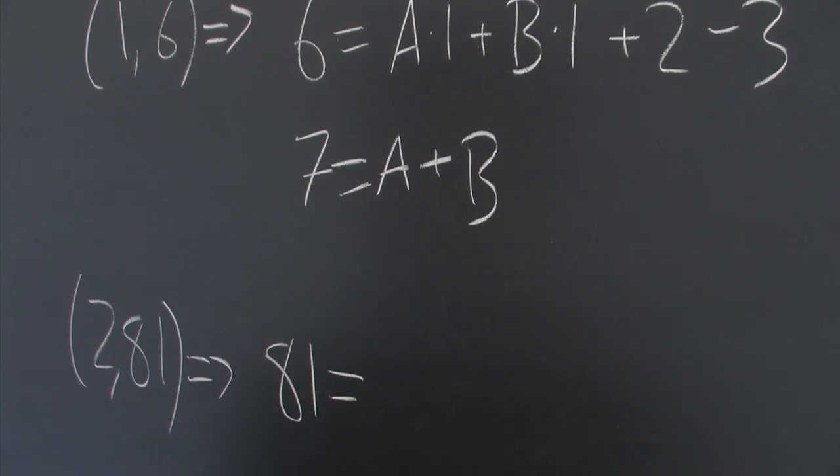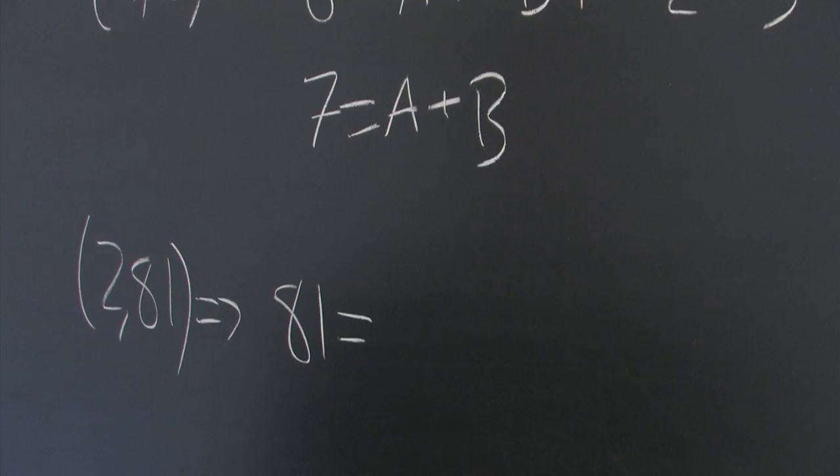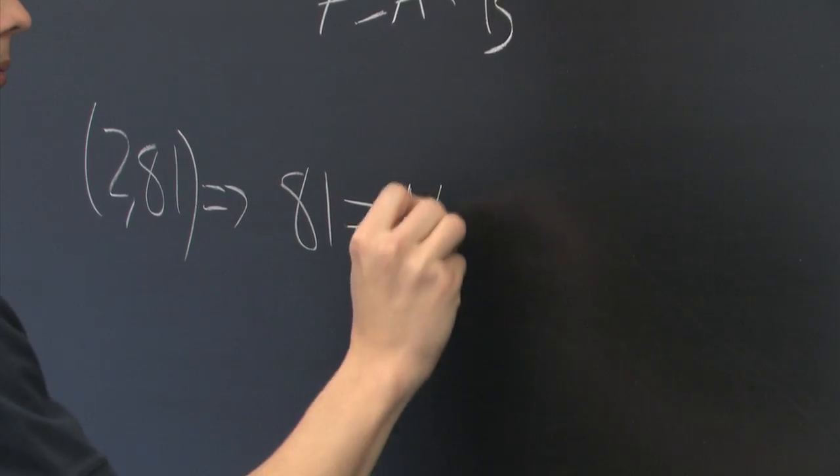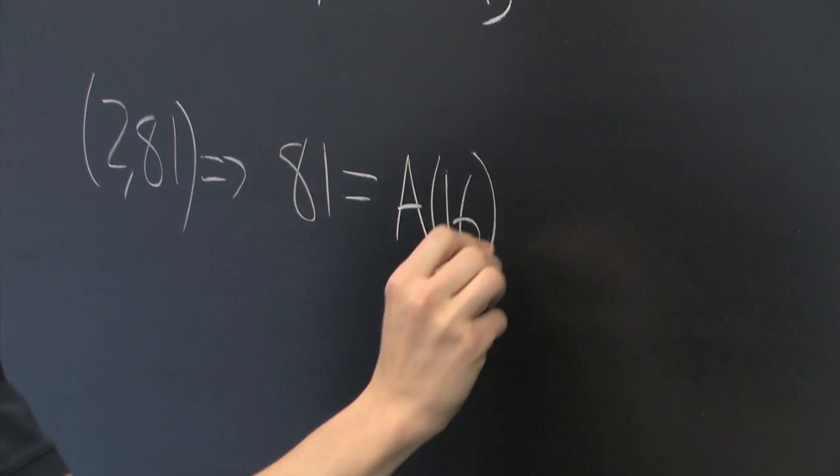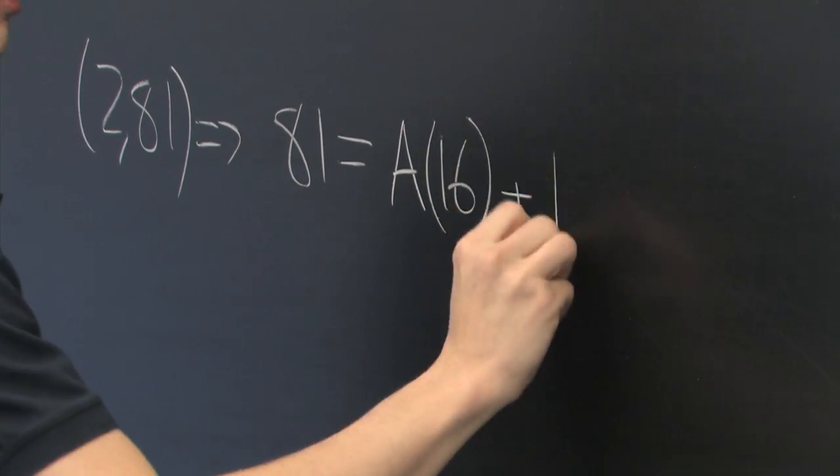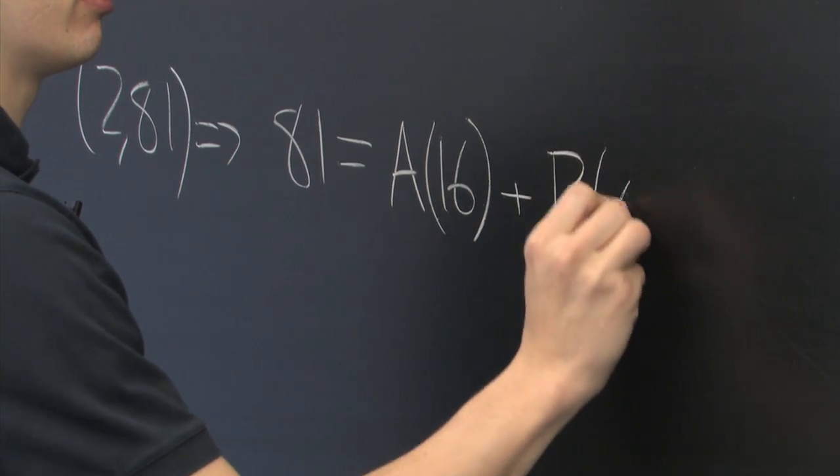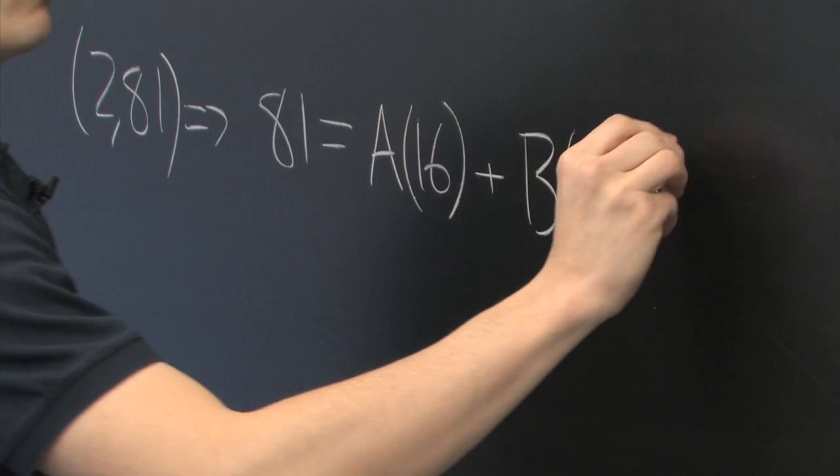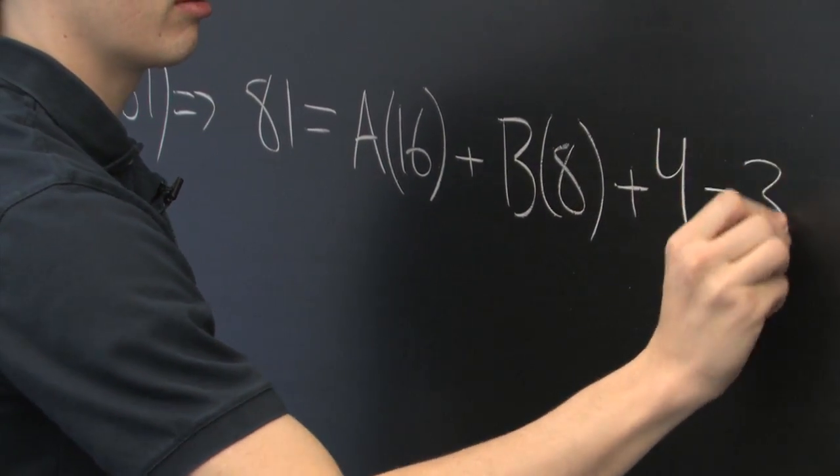So 81, which is the y-coordinate, is equal to a times two to the fourth, which is sixteen, plus b times two to the third, which is eight, plus two times two is four, minus three.